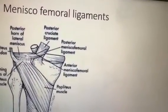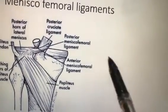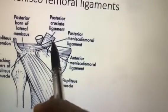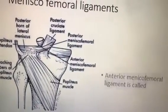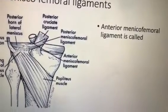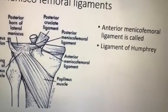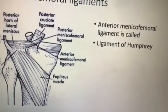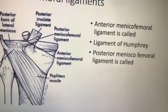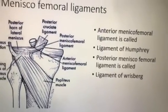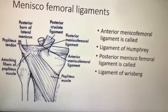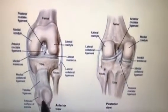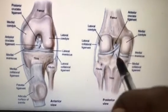The meniscofemoral ligaments connect the menisci to the femur. The anterior meniscofemoral ligament is called the ligament of Humphrey — H alphabet comes first, so it is anterior. The posterior meniscofemoral ligament is called the ligament of Wrisberg. This is an important MCQ.